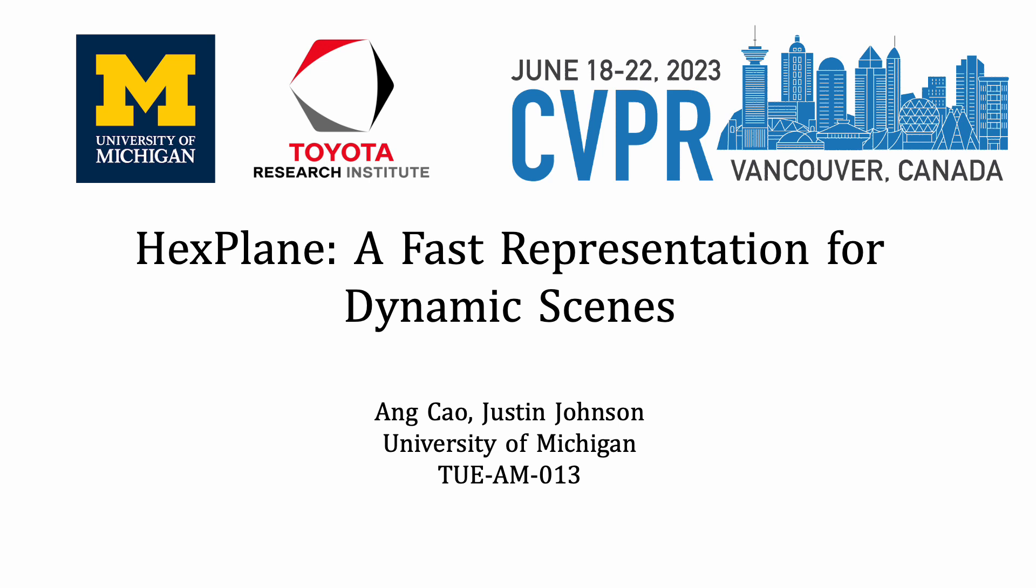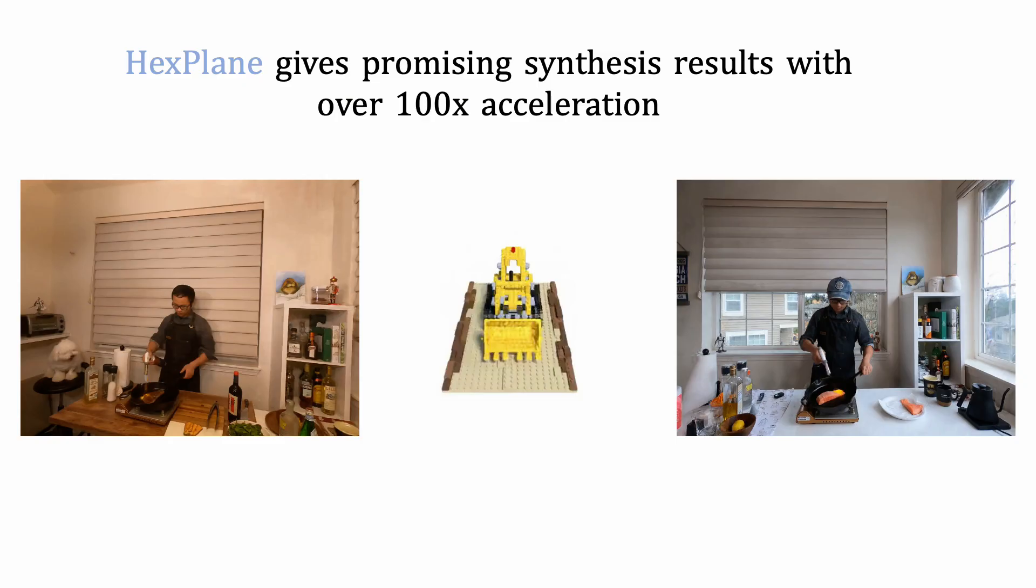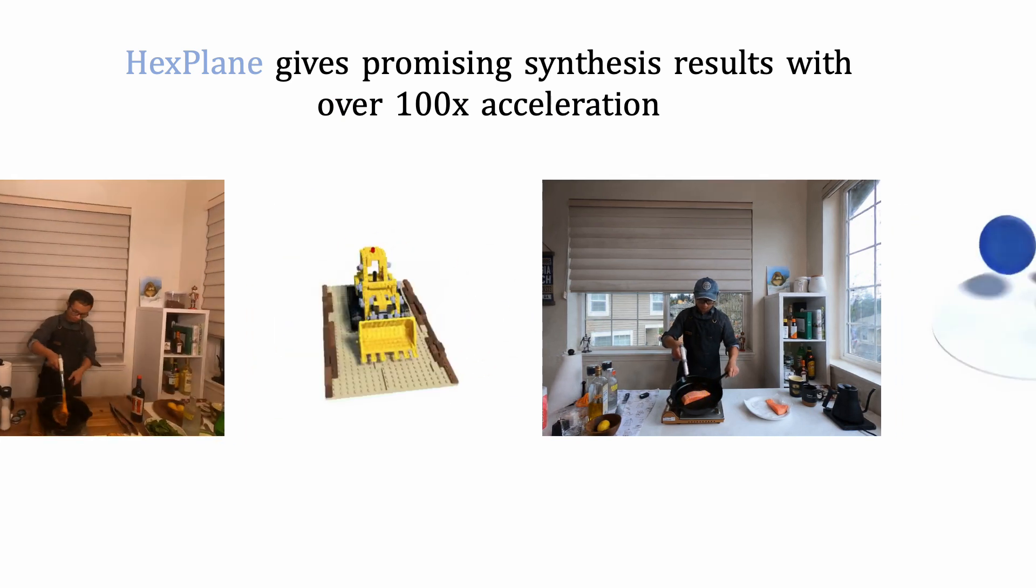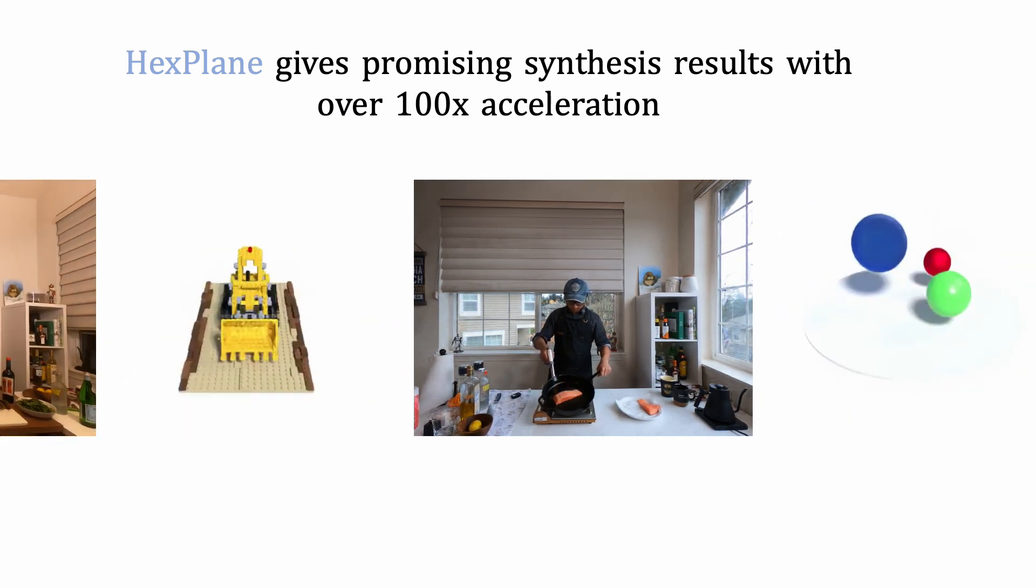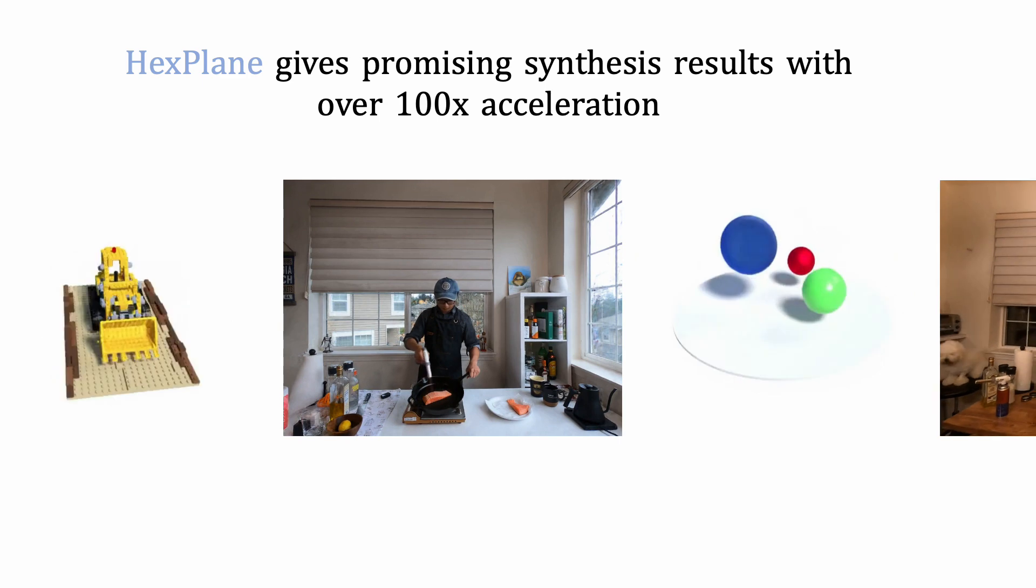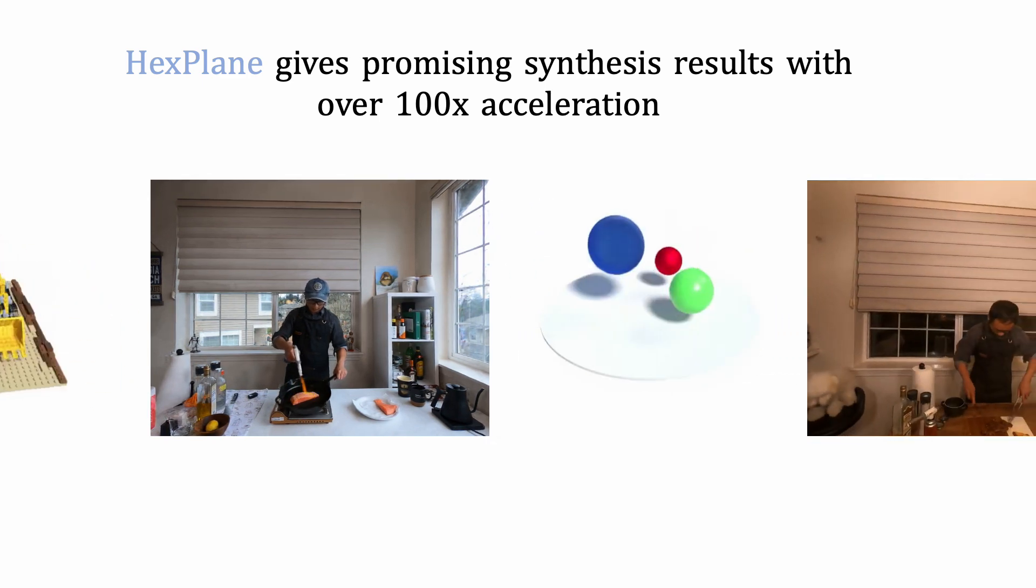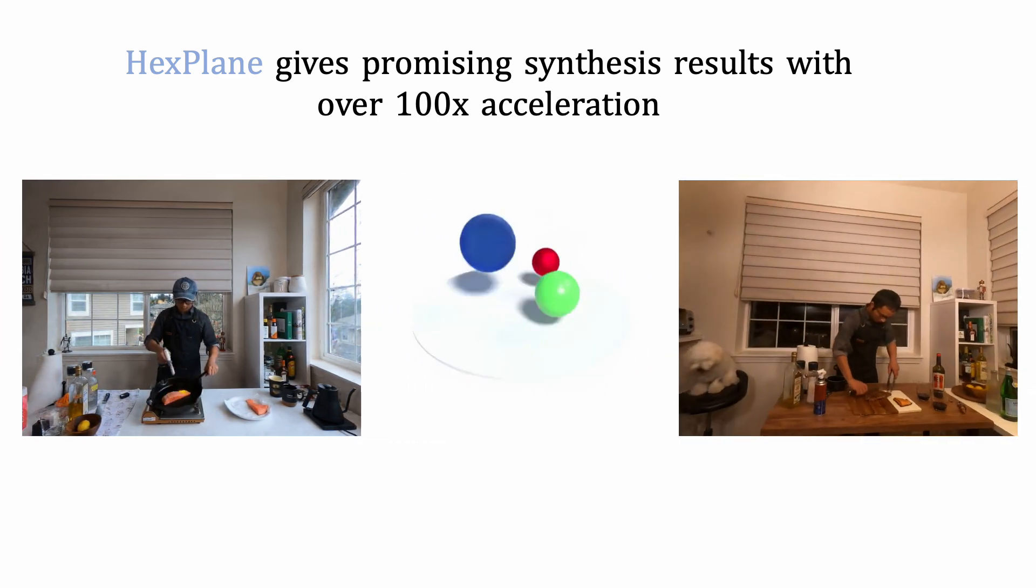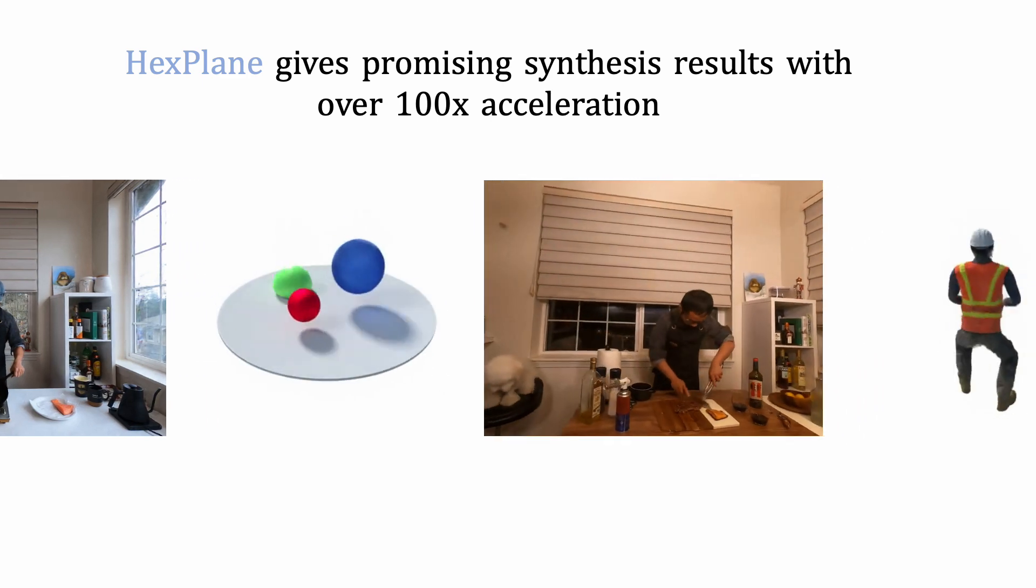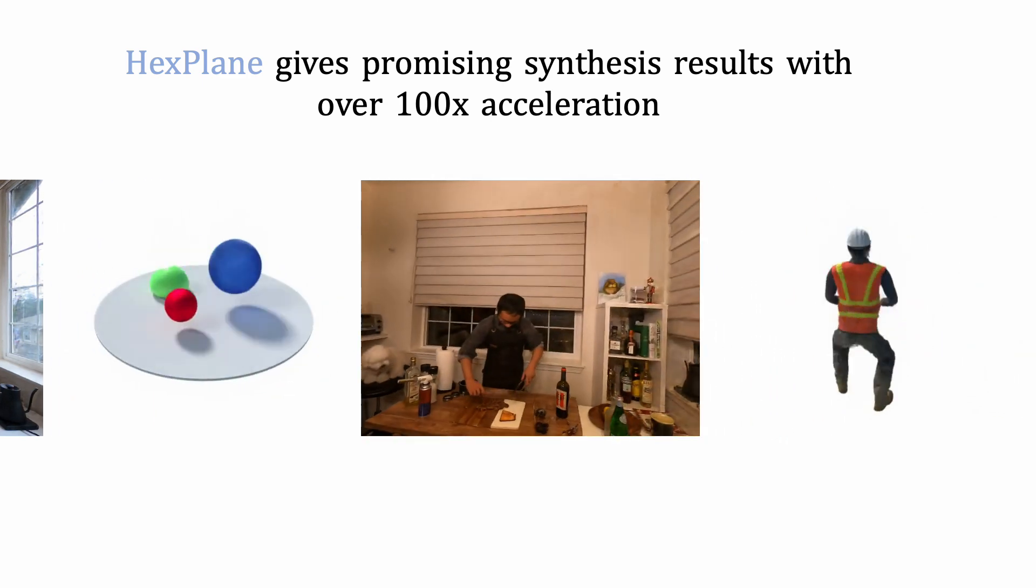We introduce HexPlane, a fast representation for dynamic scenes. Given videos with known cameras as inputs, HexPlane could be optimized to represent the corresponding dynamic 3D scene and synthesize high-quality novel views at arbitrary viewpoints and time steps, with over hundreds of times acceleration compared to existing methods.